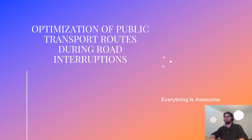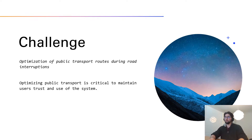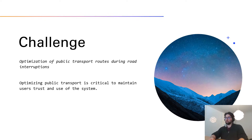This is our solution to the challenge: optimization of public transport routes during road interruptions. We are team Everything is Awesome and I'm Julien. The challenge focuses on rerouting bus routes based on interruptions and the annoyance levels for these disturbed reroutes, because we believe that optimizing public transport is critical to maintain user trust and use of the system.